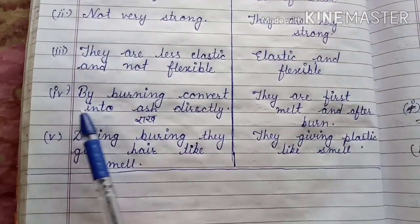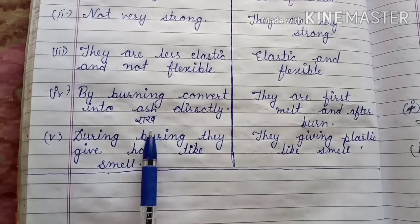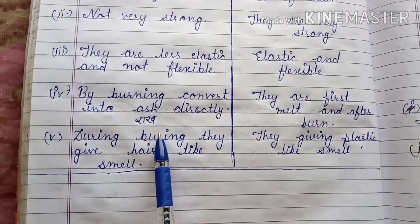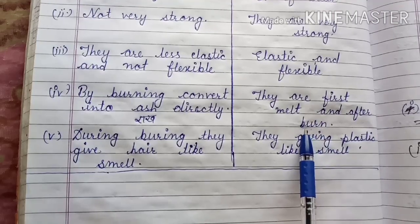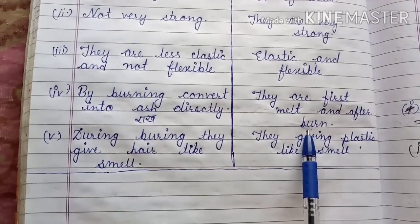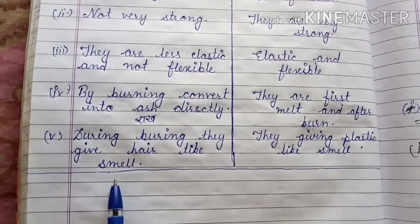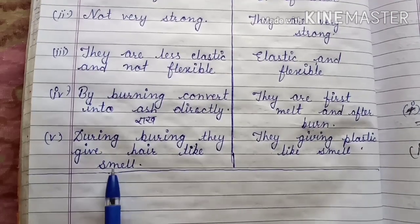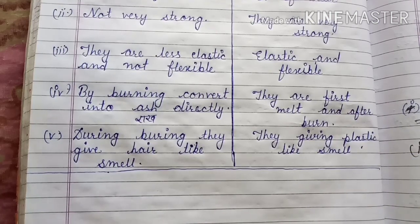Fourth difference: by burning, natural fibers convert directly into ash (raakh). Synthetic fibers first melt and then burn. During burning, natural fibers give a hair-like smell, while synthetic fibers give a plastic-like smell when burned.